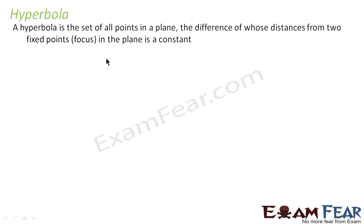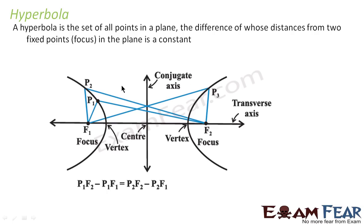Let me introduce you to hyperbola. A hyperbola is the set of all points in the plane the difference of whose distances from two fixed points in the plane is constant. Unlike the ellipse where the sum of distances was constant, here the difference of distances is constant. For any point — P1, P2, or P3 — the difference of distances from the two foci F1 and F2 is always constant, regardless of sign.